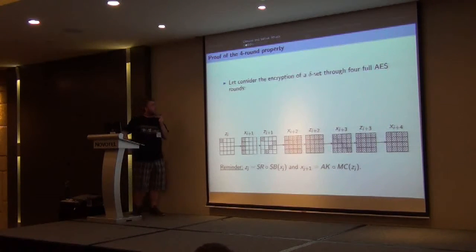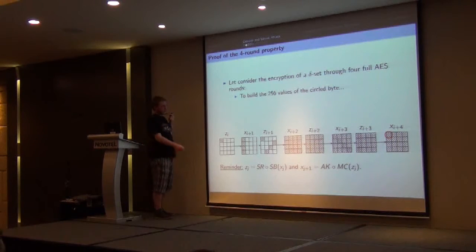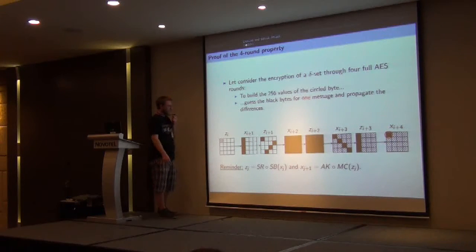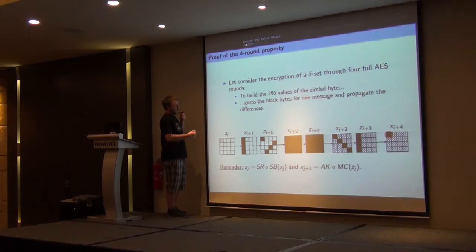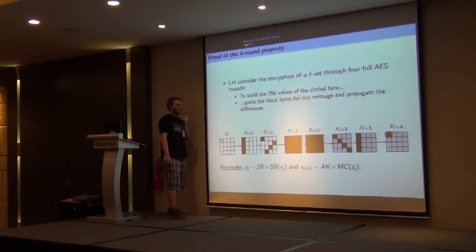The proof of this property is simple. Consider the encryption of a delta-set where there is no difference in a white byte. To build the sequence of 256 values in the circle byte, we guess the values of the black bytes for one message, and propagate the differences from the first state to the last one. Since we consider a delta-set, we already know all differences in the first state. By linearity, we can compute all differences in the second state, know all values of the black bytes for all messages, apply the S-box on each of them, and since the other differences are zero, we know all differences in the third state. We can apply the same technique to obtain the sequences of values of the circle bytes.